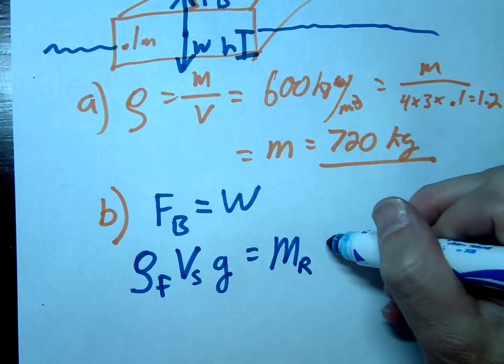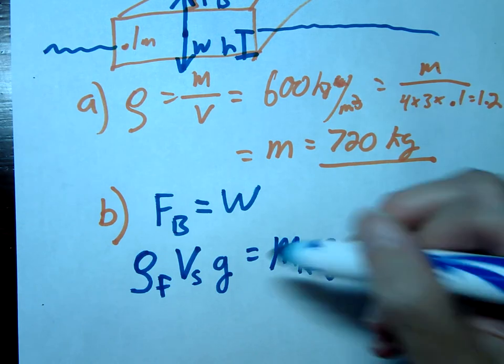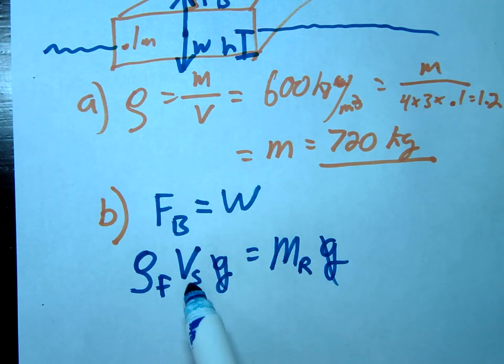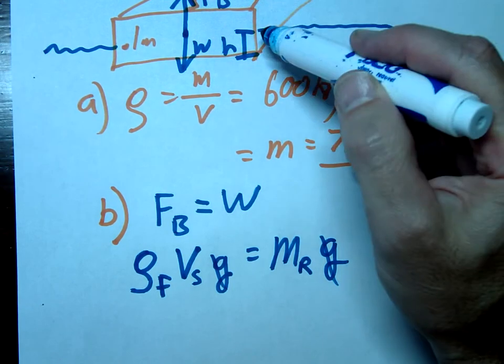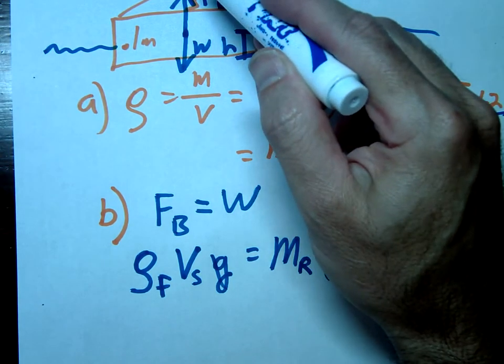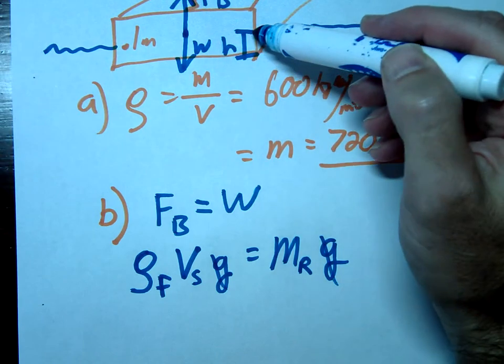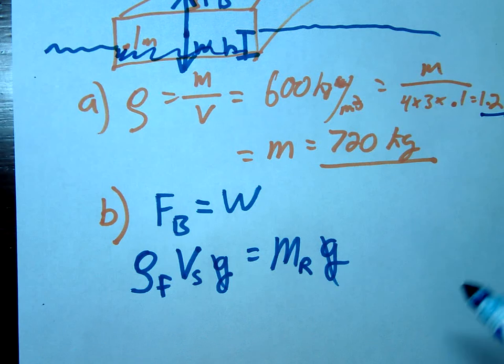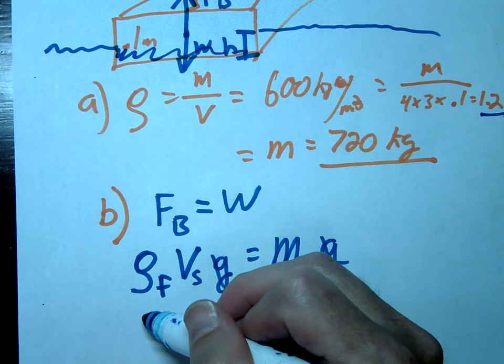So little g cancels here. The volume submerged, so this is not going to be that full 1.2 volume, this is only the amount that's underneath. So this would be the area 4 times 3 times the h, so just this amount that's underneath the water.